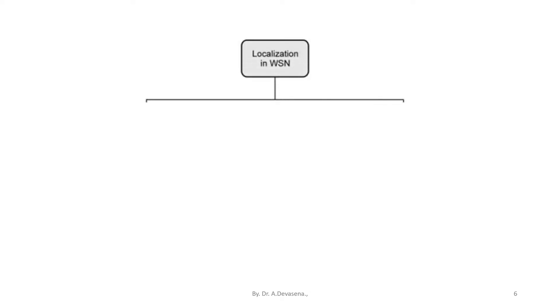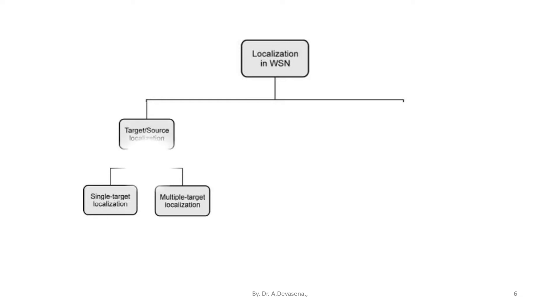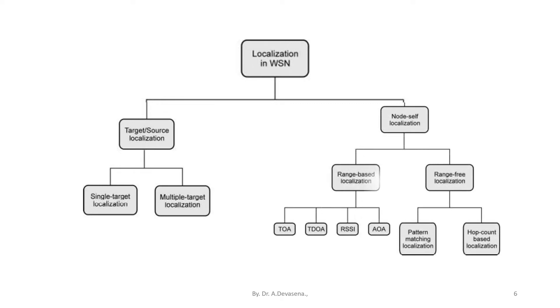Localization techniques can be classified into two categories: target or source localization, and node or self-localization. Target or source localization is further classified into single-target localization and multiple-target localization. Node or self-localization is further classified into range-based localization and range-free localization, which we are going to discuss in further slides.